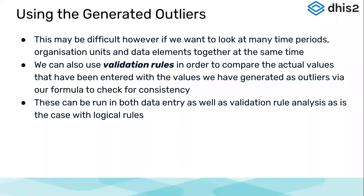How do we use these generated outlier values? If we go to each period's data entry screen and look for validation errors, this might be difficult because you have to look at many time periods to assess threshold values. However, if you want to look at many time periods, organization units, and data elements together at the same time for consistency, it is always easier to run these outliers through validation rule analysis. It is more effective to do this validation check through the validation rule analysis app in data quality.